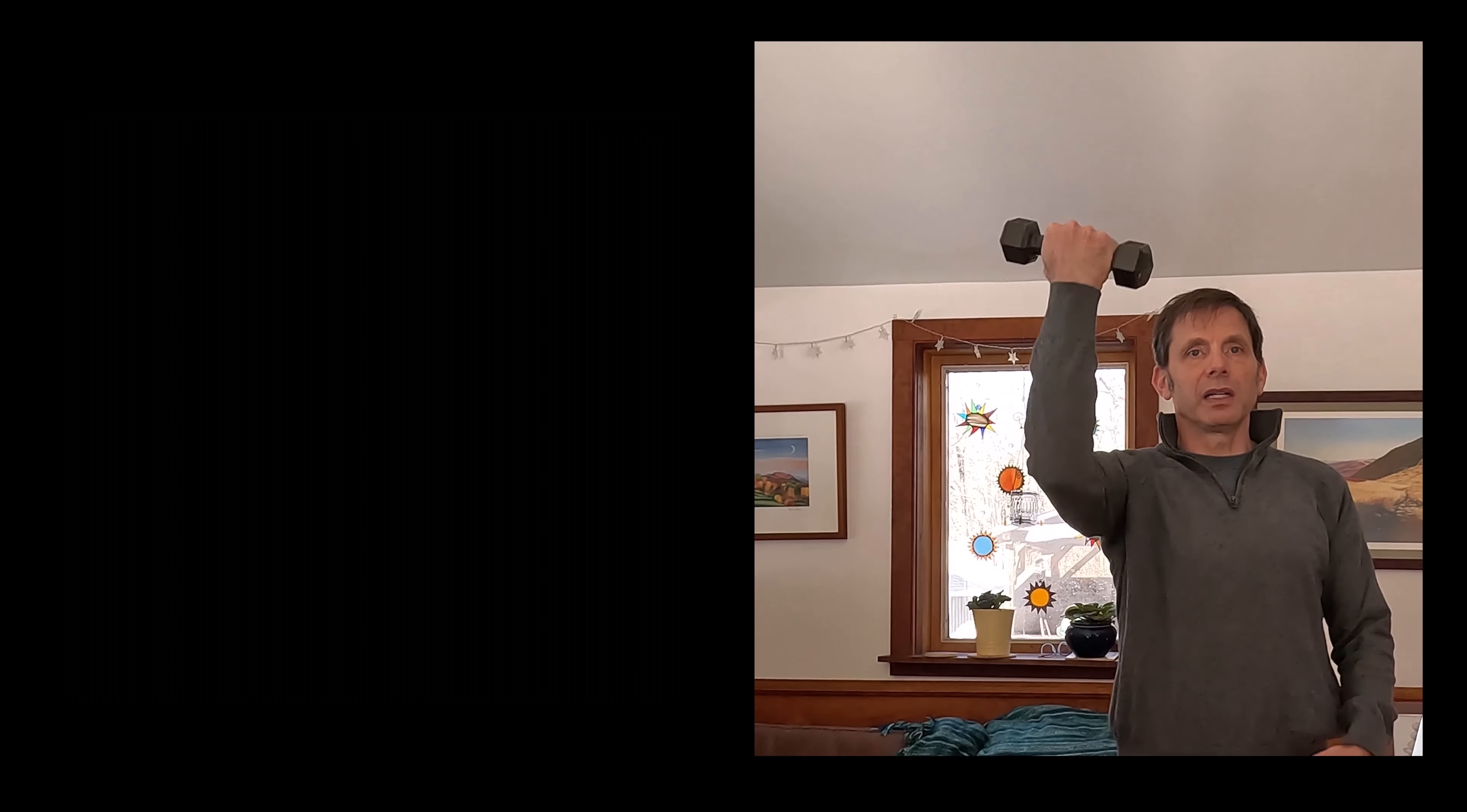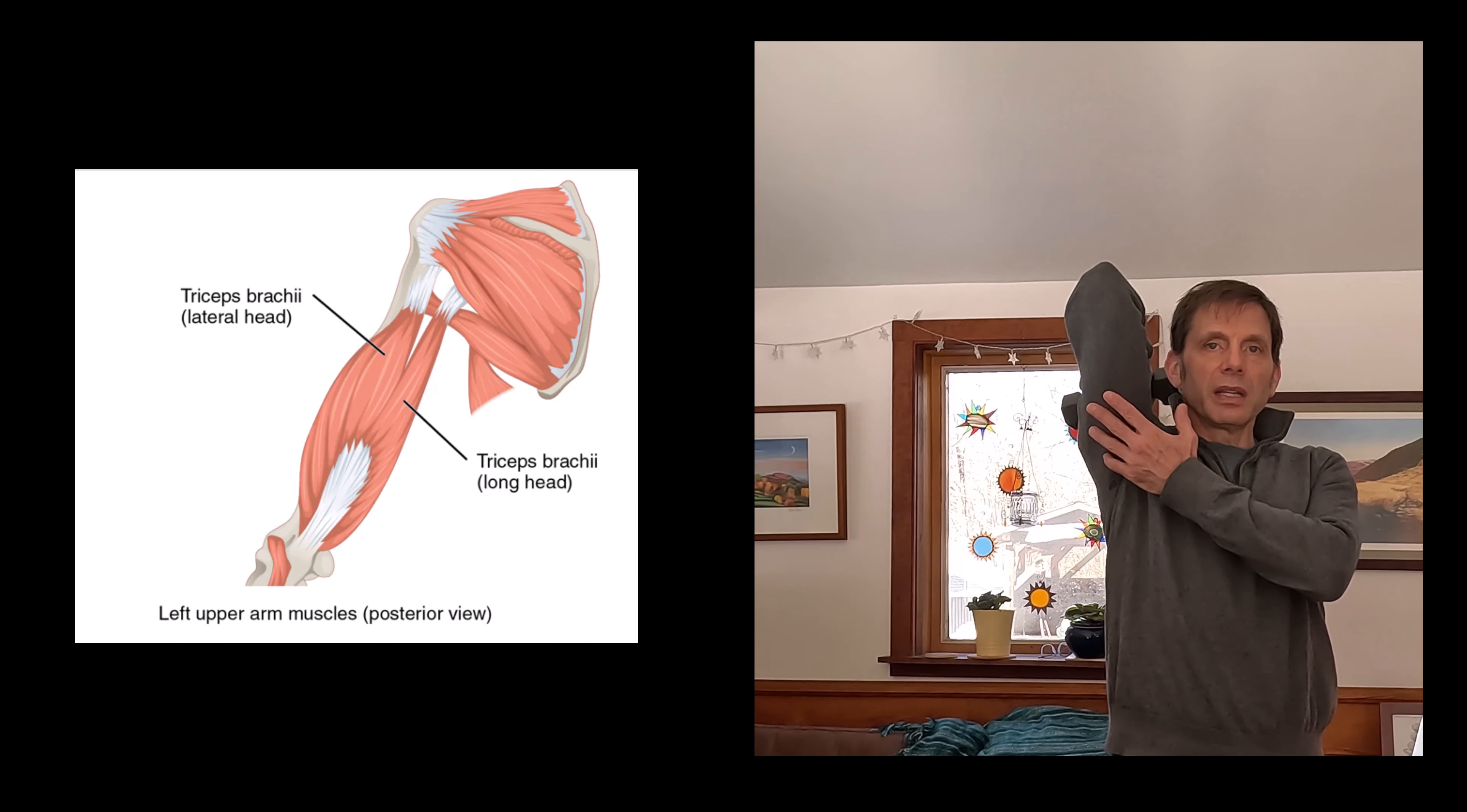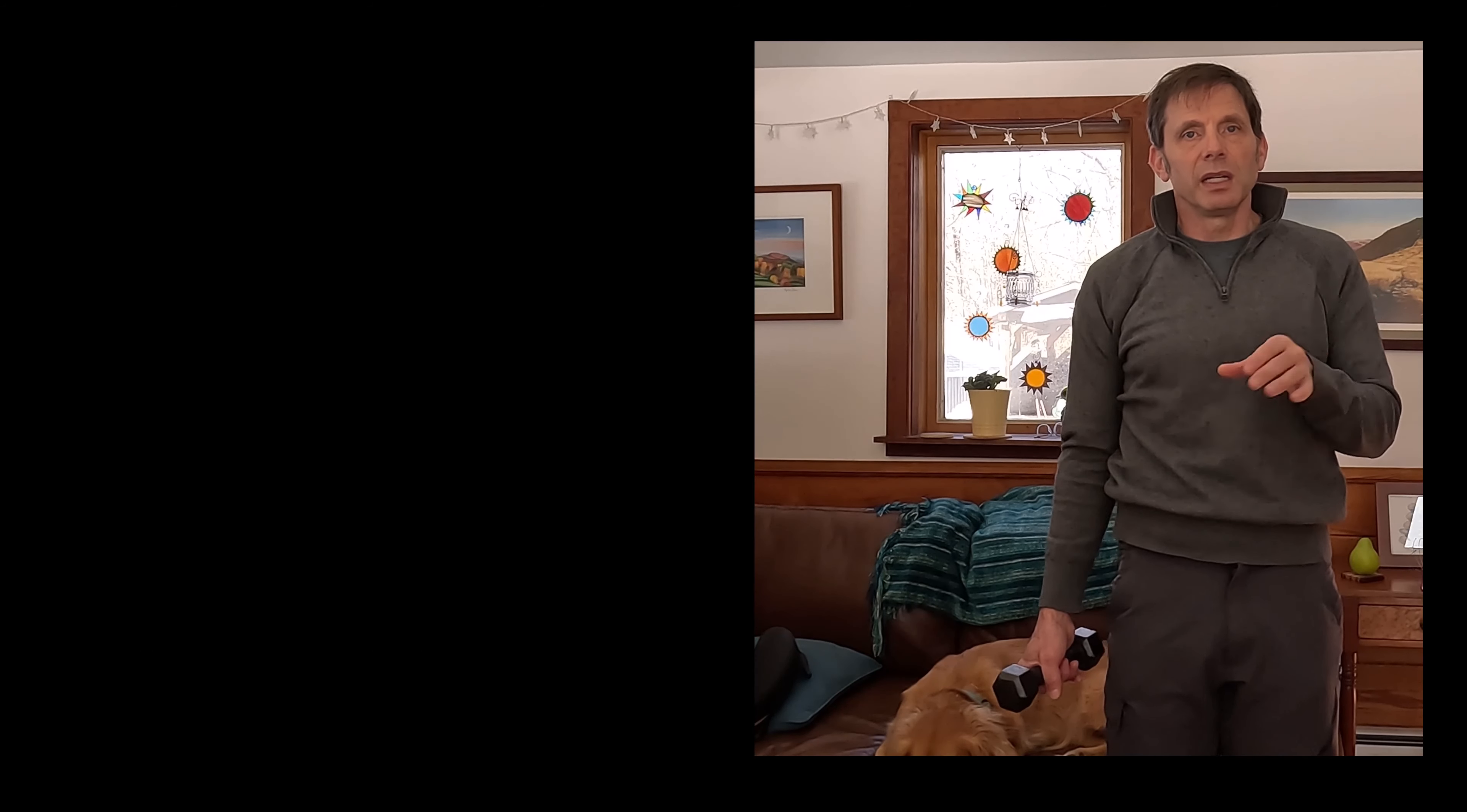A muscle can exert force only to shorten. That's because the motor proteins are organized so that they only pull the edges of the sarcomere toward the center. If I want the brachialis to lengthen, some other force has to produce the movement. In this case, I'm going to relax the brachialis, and gravity lengthens the muscle. This is a motion called elbow extension.